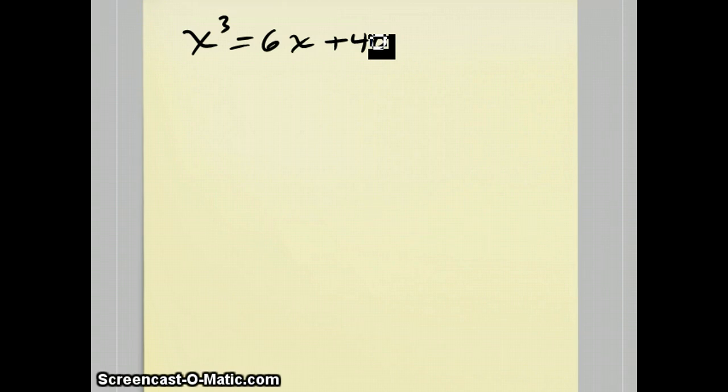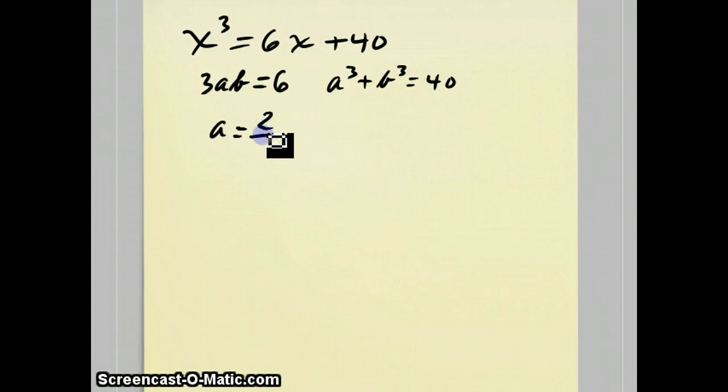But let's see what happens if we use this process. The process says to create the pair of equations 3ab equals the coefficient of the x, which is 6, and a cubed plus b cubed equals 40.